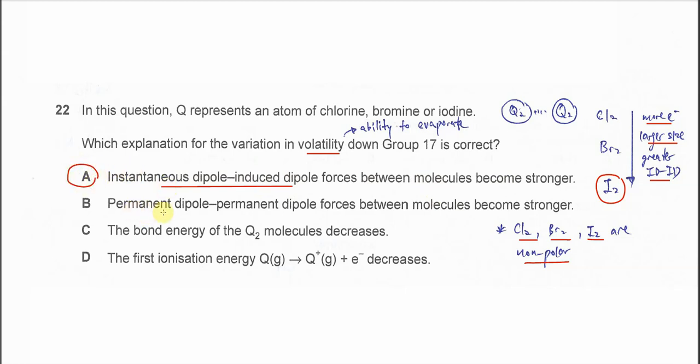B cannot be the answer because it's not about permanent dipole-permanent dipole. The chlorine, bromine, iodine are non-polar, so they don't have the PDPD.